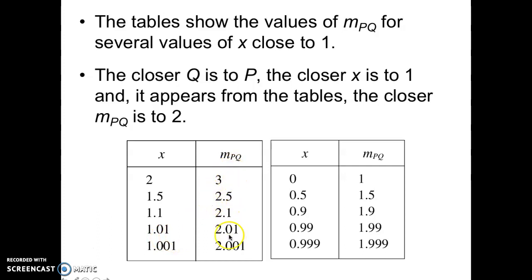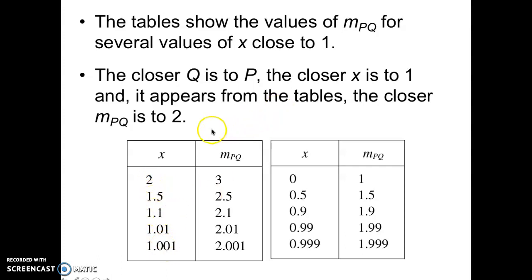You can see what they're doing here. They're finding the slope between the two points as Q comes closer and closer to P, which is staying at 1, which is our point of tangency. This is coming in from the right toward 1 — so from 2, then 1.5, it's coming in toward 1 from the right.